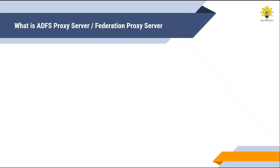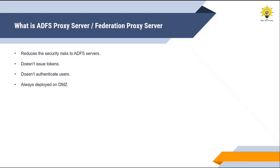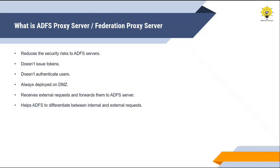A few important points about ADFS proxy server: it reduces the security risk to the ADFS server — you do not have to expose your ADFS server to the internet. ADFS proxy server doesn't issue tokens. ADFS proxy server doesn't authenticate the users. ADFS proxy server is always deployed on the perimeter network. Its role is to receive external requests and forward those requests to the ADFS server. It helps the ADFS server identify which request is coming from the internal network and which from the external network. And by deploying ADFS proxy server, we can enable MFA for external users.